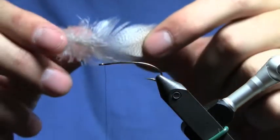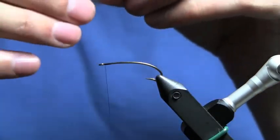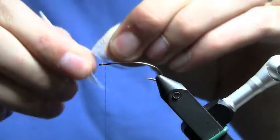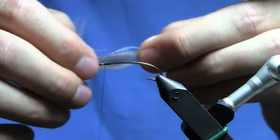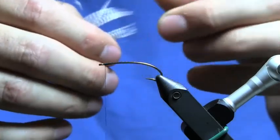I'm going to select a mallard feather. I'm going to trim off all the fuzz and junk. Then I'm going to brush all the good fibers forward and expose the tip.